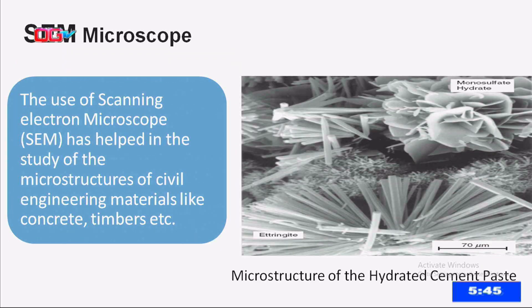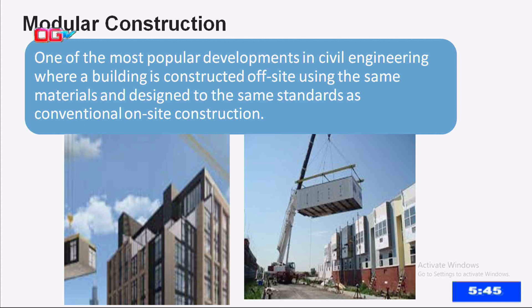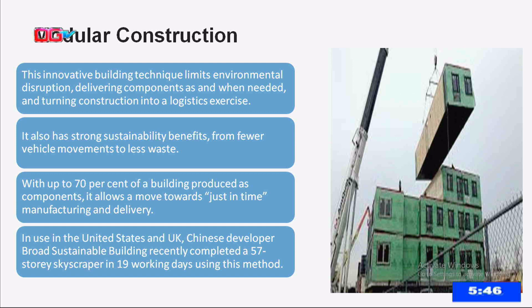In engineering today, we use the scanning electron microscope to investigate and study the microstructure of our materials. For instance, when you mix cement with water and it hardens, the microscope reveals its internal structure. Similarly, when you slice timber and view it under the microscope, it shows features that look like honeycomb — but it's actually timber. We also have modular construction these days: when you don't have enough space to build on-site, you can construct off-site and use a crane to place it in position. We call that pre-casting.